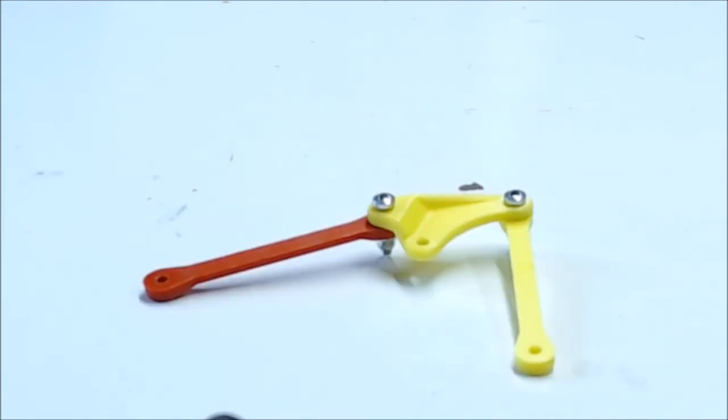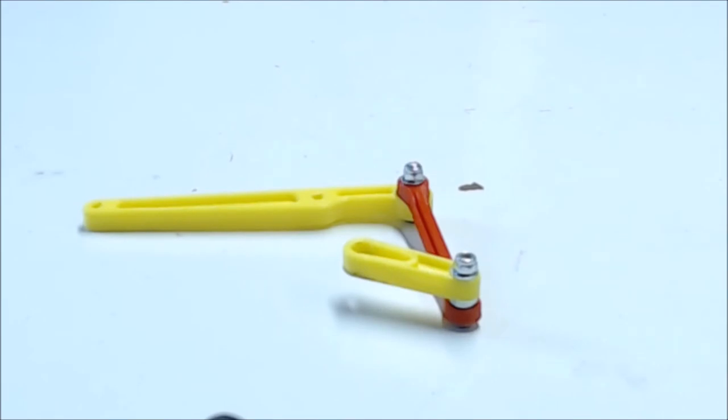First take two of the straight links and the triangle link piece and bolt them together. Make sure the orientation of the triangle link is correct. It will work both ways but if you get it backwards the arm won't have full movement. Then take the horizontal arm, the vertical arm, and the last straight link and put them together. Use three washers to separate the vertical arm and the link at the bottom.